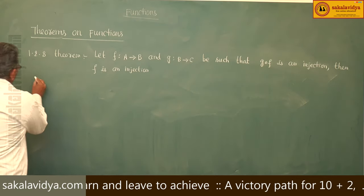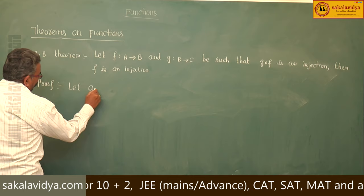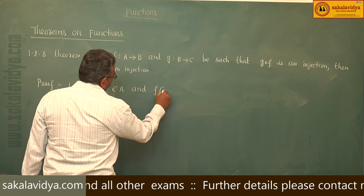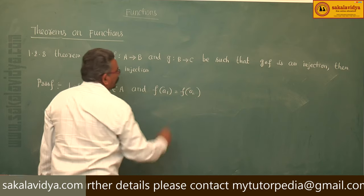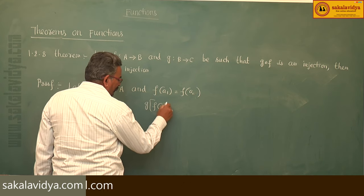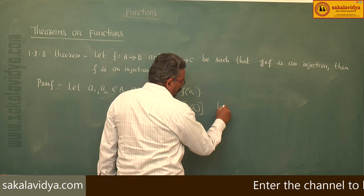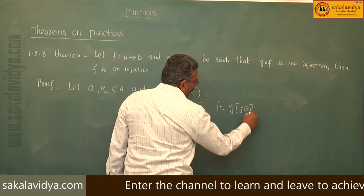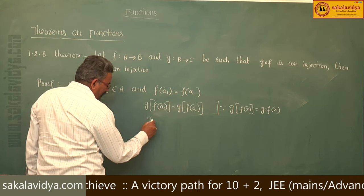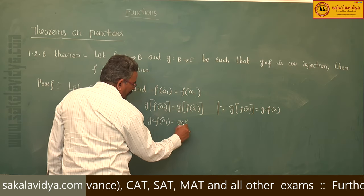Let us prove it. Let a1, a2 belong to A and f of a1 is equal to f of a2. Apply g on both sides. So, g of f of a1 is equal to g of f of a2. Now, g of f of a1 can be written as g circle f of a1, and g of f of a2 can be written as g circle f of a2.